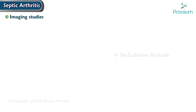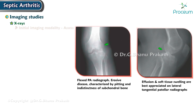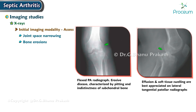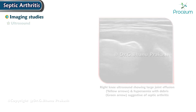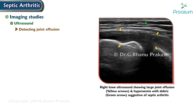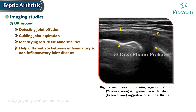Imaging studies include X-rays as the initial modality to assess joint space narrowing, bone erosions, and soft tissue swelling; they may not reveal early joint changes but help exclude fractures. Ultrasound is useful for detecting joint effusion, guiding joint aspiration, and identifying soft tissue abnormalities, helping differentiate inflammatory from non-inflammatory joint diseases.